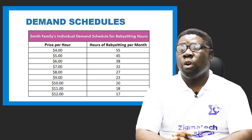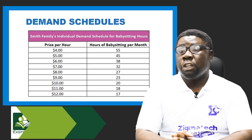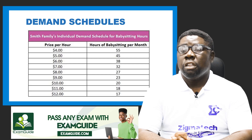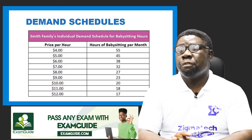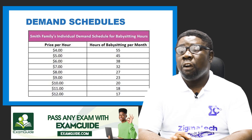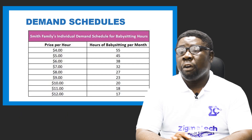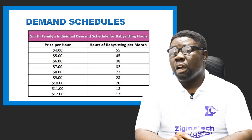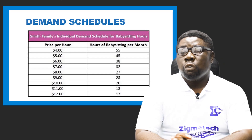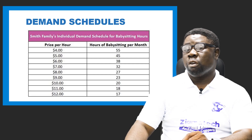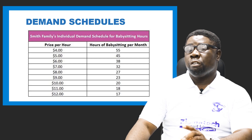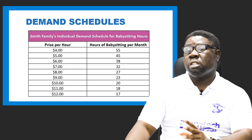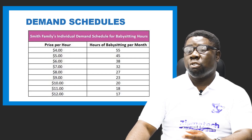Here you have an example of an individual demand schedule — it's called a Smith family demand schedule for babysitting hours. Price per hour is $40 when babysitting for 55 hours per month. You go down the table and you can use it to draw your demand curve. This is a typical example of a demand schedule for a service product, showing how it is outlined.